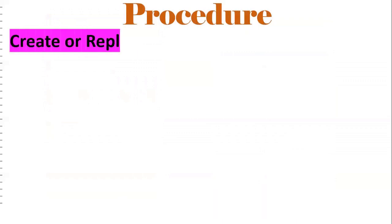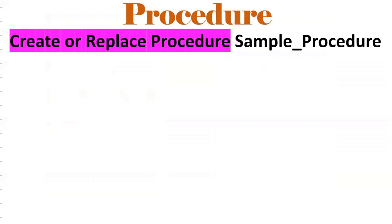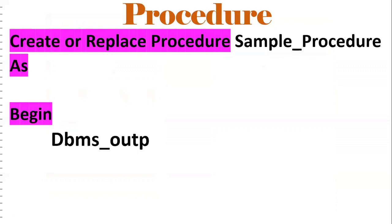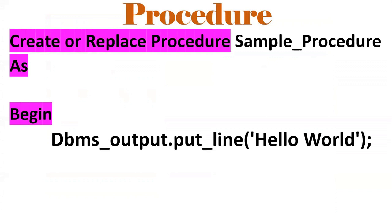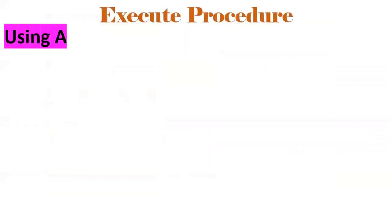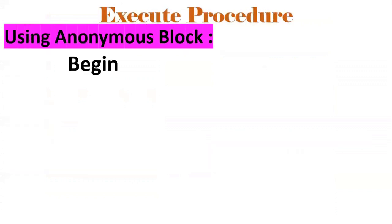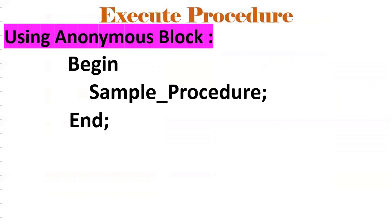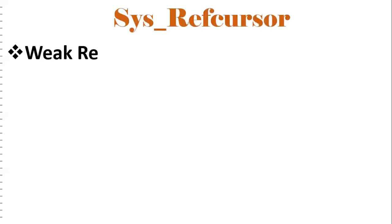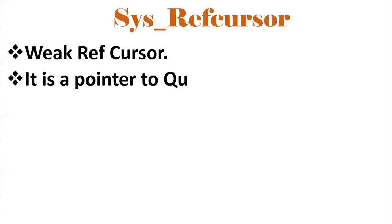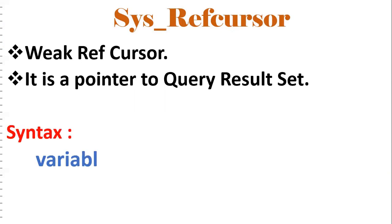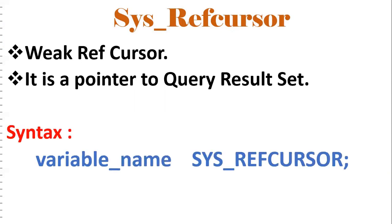Before going to the actual topic, let us understand some concepts. Here is a simple procedure: CREATE OR REPLACE PROCEDURE with a procedure name, BEGIN, and DBMS_OUTPUT.PUT_LINE('Hello World'). To execute it, we use an anonymous block: BEGIN, then the procedure name, then END — the output will be 'Hello World'. Next is SYS_REFCURSOR, which is a weak ref cursor. It points to a query result, and the syntax is: variable name followed by SYS_REFCURSOR.